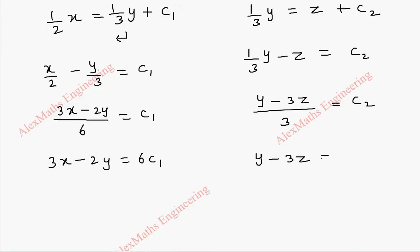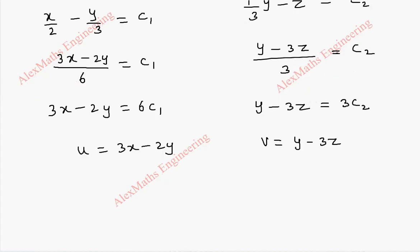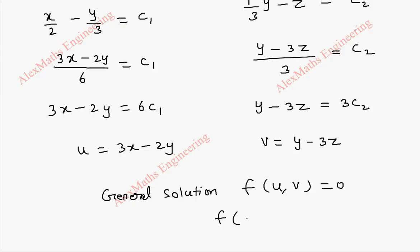So finally, we take u equal to 3x minus 2y and v equal to y minus 3z. Our general solution is f of u, v equal to 0, that is f of (3x minus 2y, y minus 3z) equal to 0.